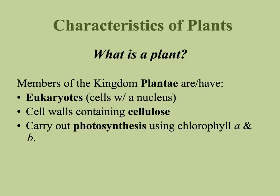Another very important characteristic is that plants can carry out photosynthesis using chlorophyll A and B — just two different types of chlorophyll that absorb different wavelengths of light. Not all plants are going to meet all of these characteristics. Some plants have cell walls with cellulose and are eukaryotic, but they don't carry out photosynthesis because they're considered parasitic plants. We'll talk about those later.